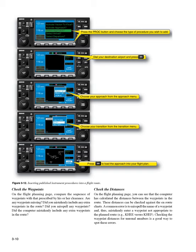Check the waypoints on the flight planning page — compare the sequence of waypoints with that prescribed by your clearance. Are any waypoints missing? Did you mistakenly include any extra waypoints in the route? Did you misspell any waypoints? Did the computer mistakenly include any extra waypoints in the route? Check the distances on the flight planning page: the computer has calculated the distances between the waypoints in the route. These distances can be checked against the en-route charts. A common error is to misspell the name of a waypoint and thus mistakenly enter a waypoint not appropriate to the planned route. Checking the waypoint distances for unusual numbers is a good way to spot these errors.